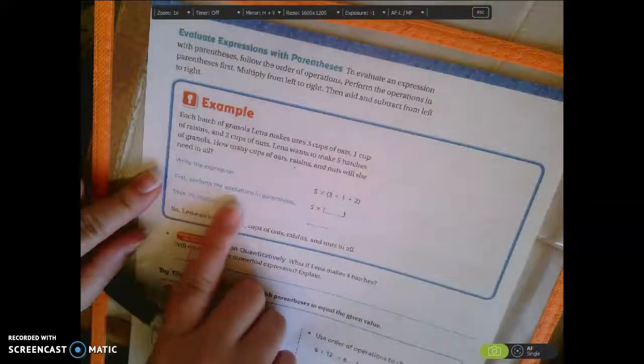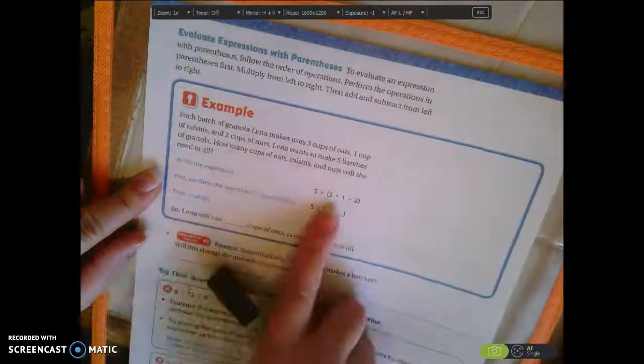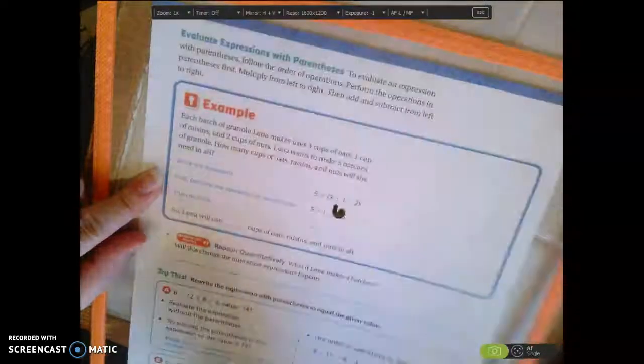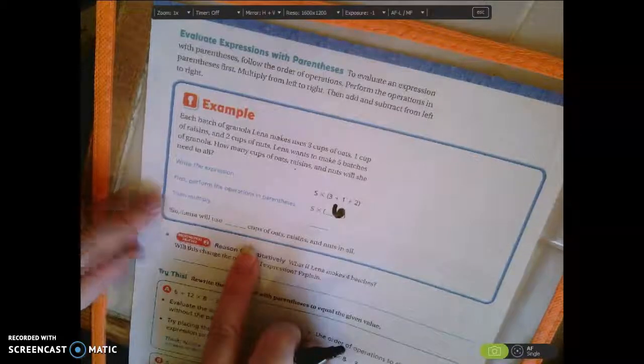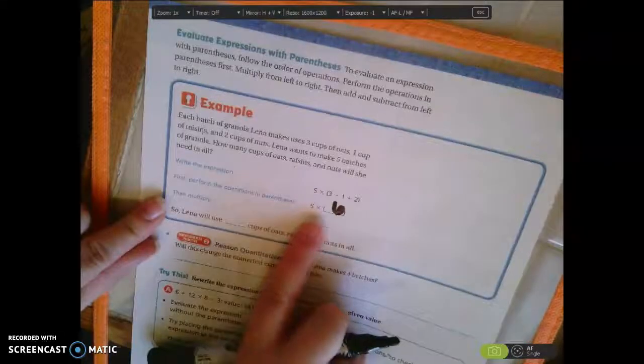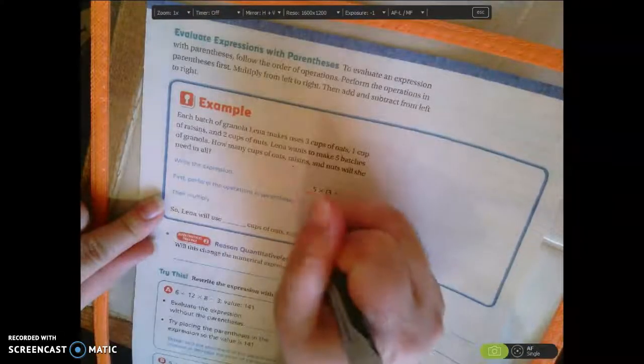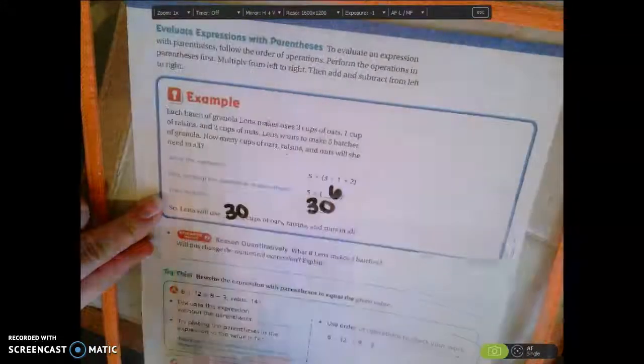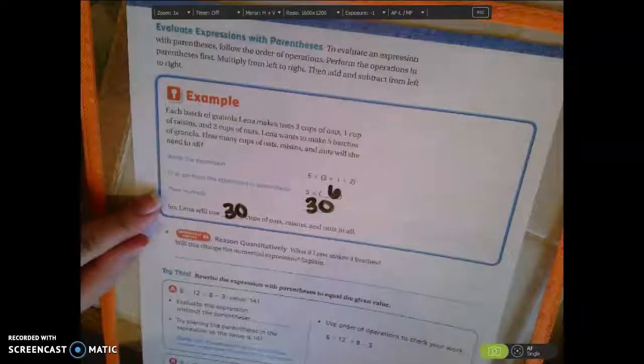First perform the operations in parentheses. So 3 plus 1 is 4, plus 2 is 6. And then we have to multiply. So 5 times 6 is 30. So Lena will use 30 cups of oats, raisins, and nuts in all.